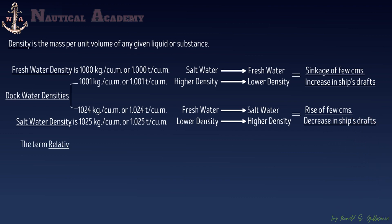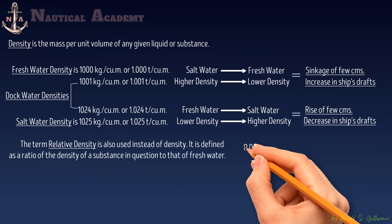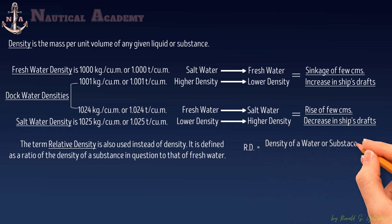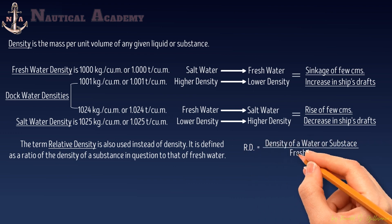The term relative density is also used instead of density. It is defined as the ratio of the density of the substance in question to that of freshwater. To find the relative density of water or substance, divide the density of that water or substance by the density of freshwater.